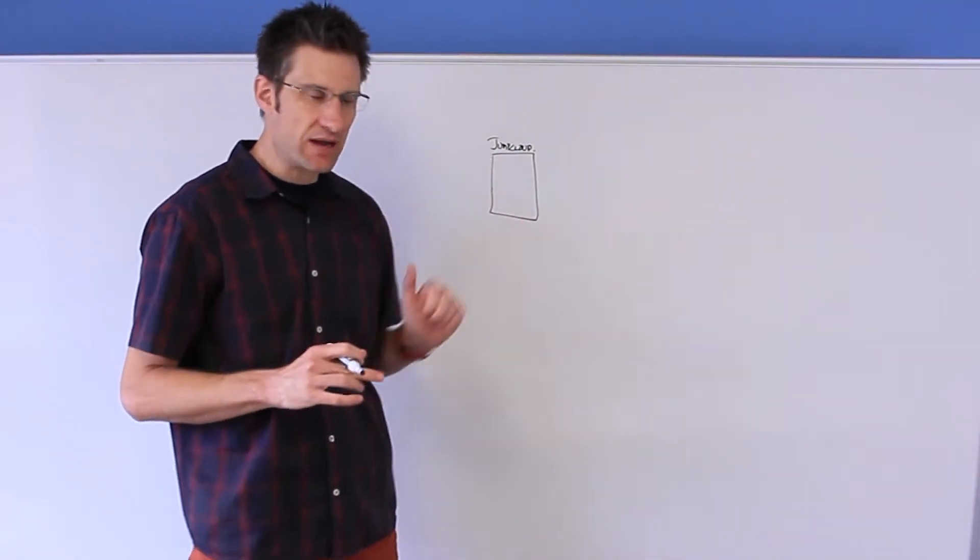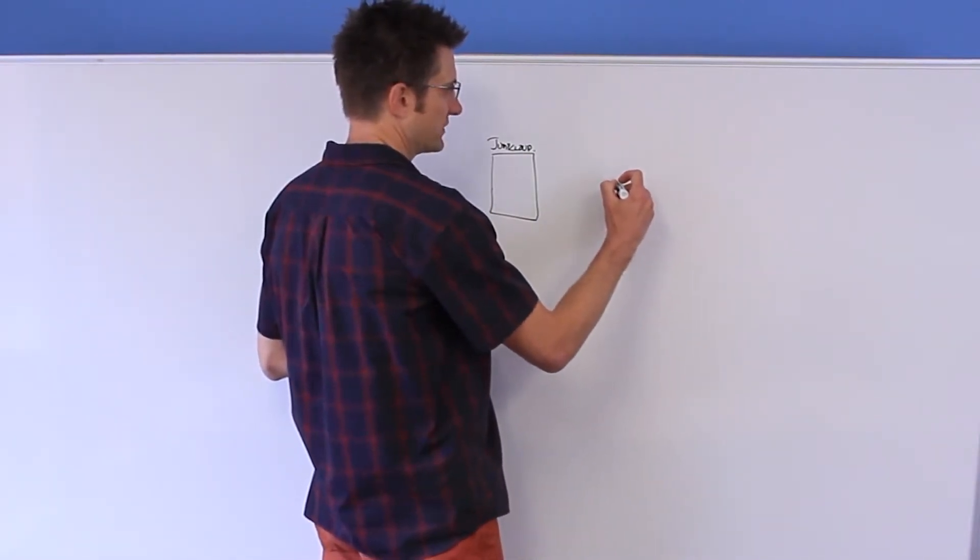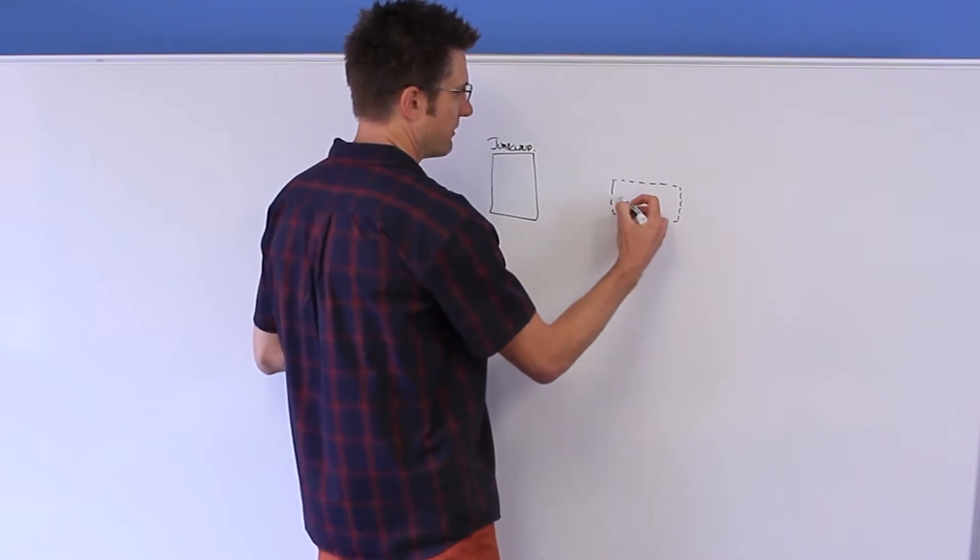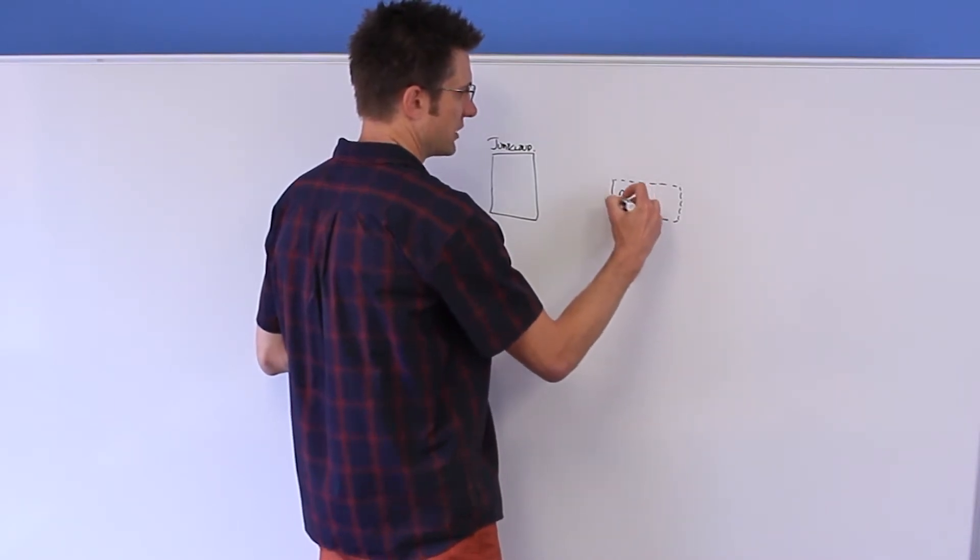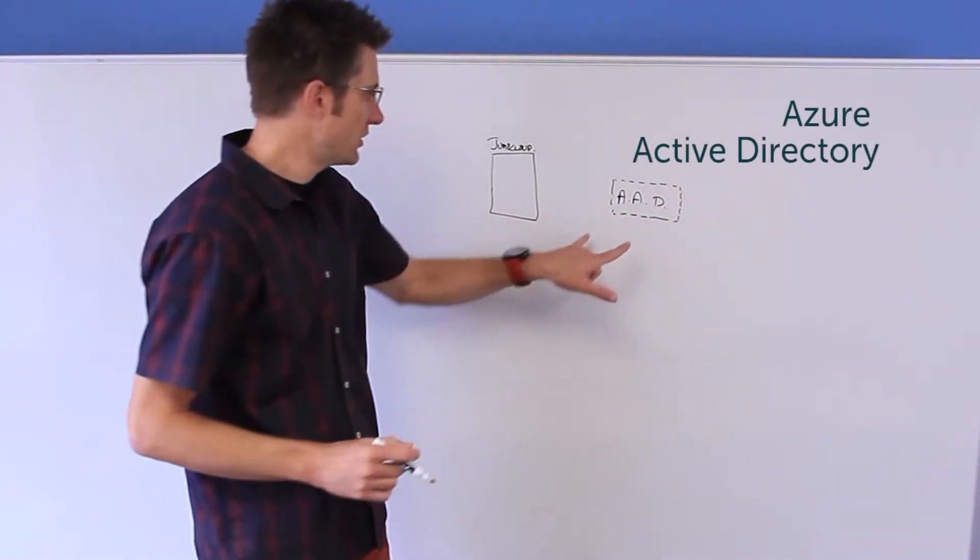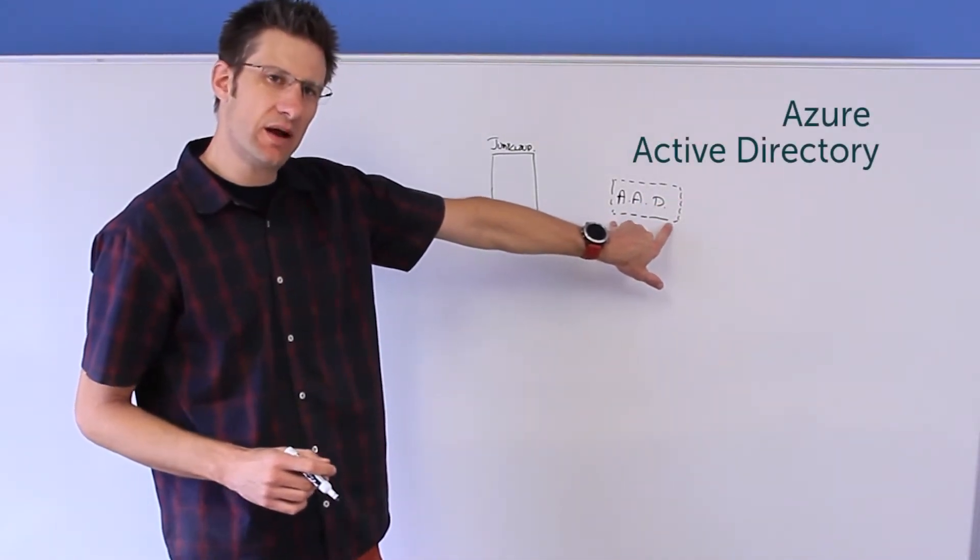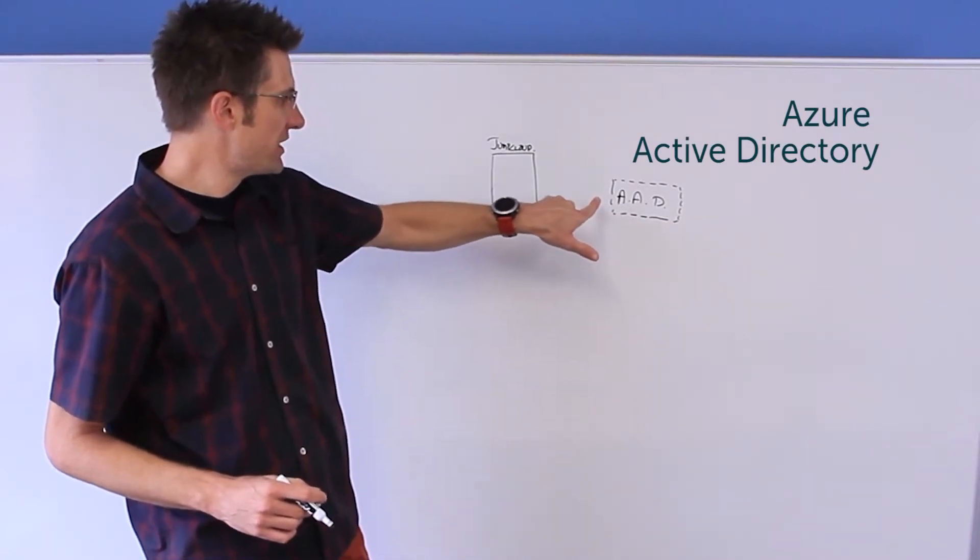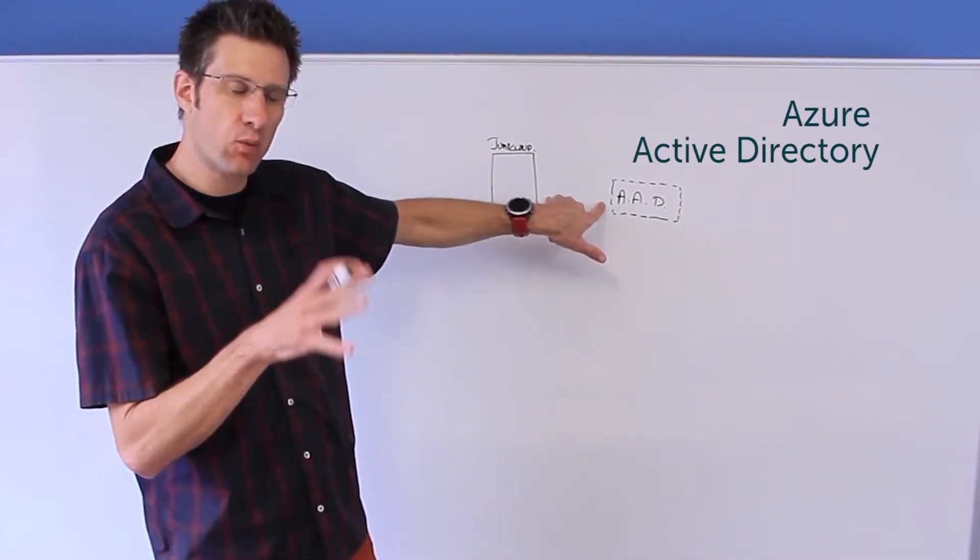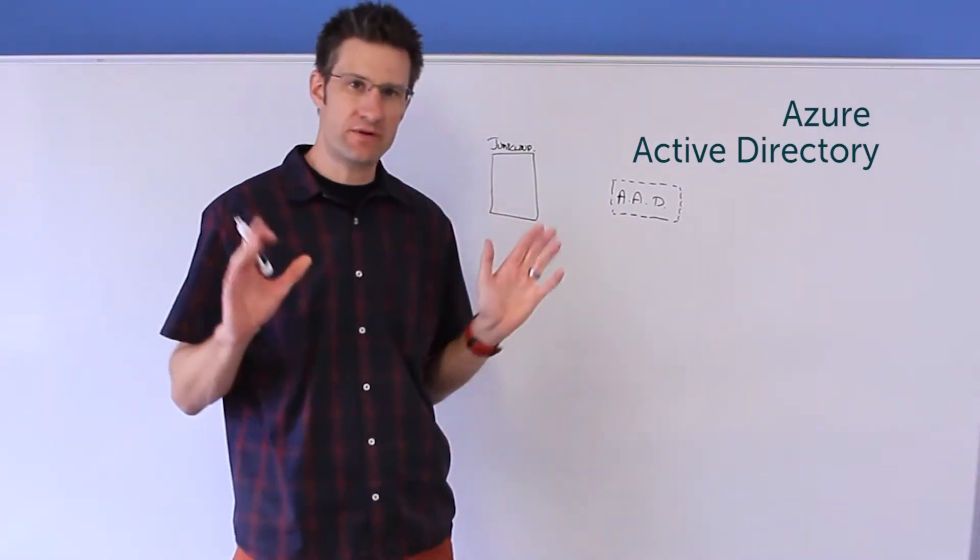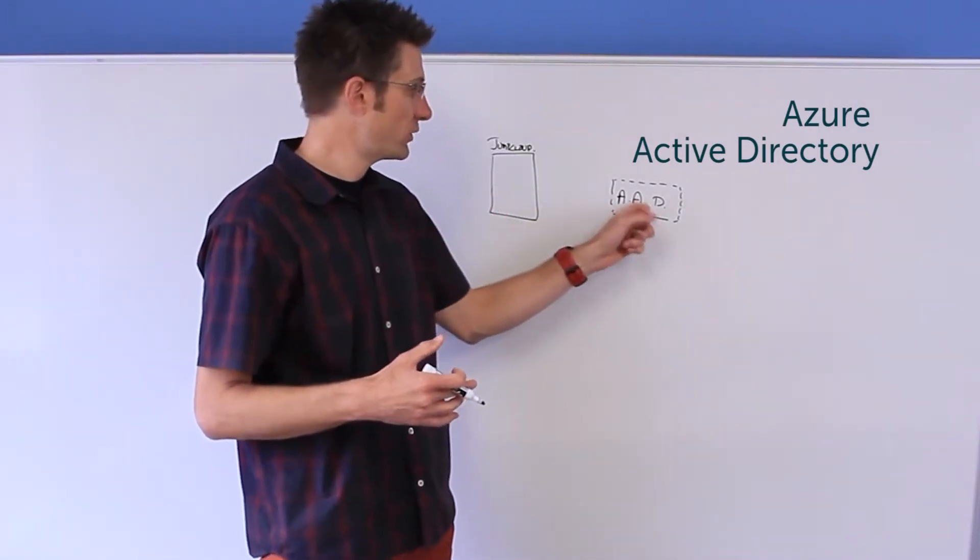The second box I'm going to draw, and I'll draw this sort of in a dotted line here, is Microsoft's Azure Active Directory. So why am I talking about AAD right here? Well, it's very interesting. The integration that we have with Microsoft Office 365 actually is all driven from our deep relationship with AAD.